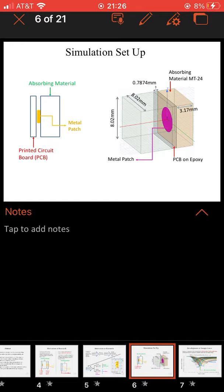The simulation setup: First we have the printed circuit board or PCB, then the metal patch, and then the absorber material. Our setup for the first box is 8.2 millimeters in height and 8.2 millimeters in width. For the PCB on epoxy, which has epsilon r equals 4.4, the measurement is 0.7874 millimeters. Then we have the metal patch, which varies in radius. Then the absorber material, MT24, which is 3.175 millimeters.